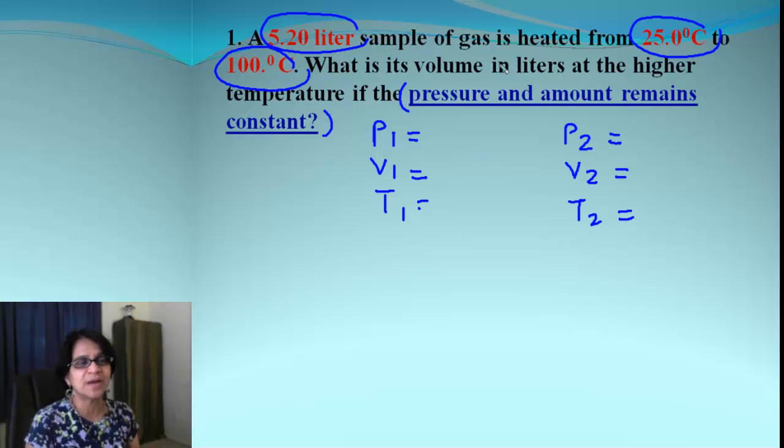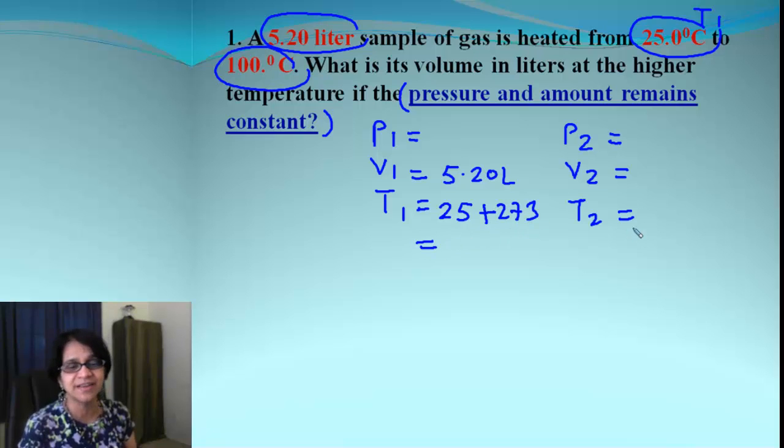So, it's 5.20 liters sample of gas. That's volume coming first. So, I am going to write down that as my volume V1. The next one is temperature, and the very first one which comes will be my temperature. So, I put that 25 degrees. Now, keep in mind, that's in Celsius. So, before I forget, I can write down plus 273. So that way I get the answer in Kelvin.